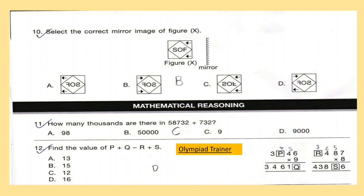Question 11: How many thousands are there in 58732 plus 732? Question 12: Find the value of P plus Q minus R plus S.